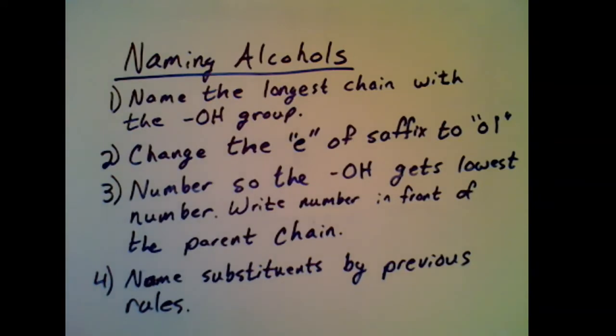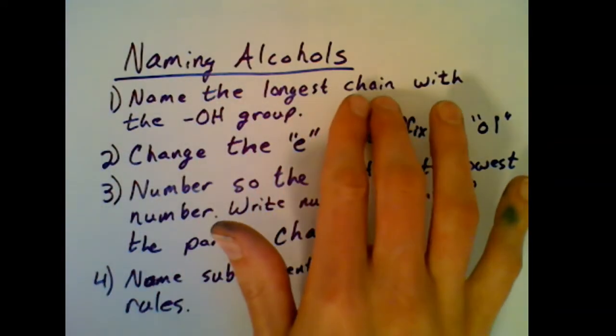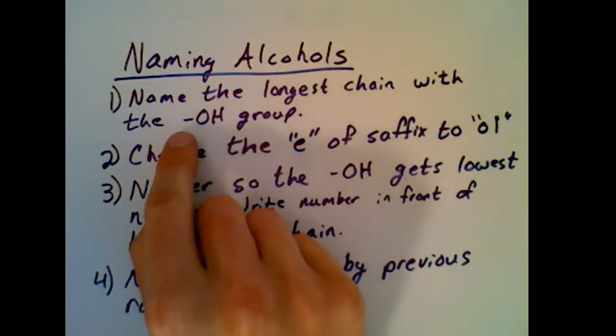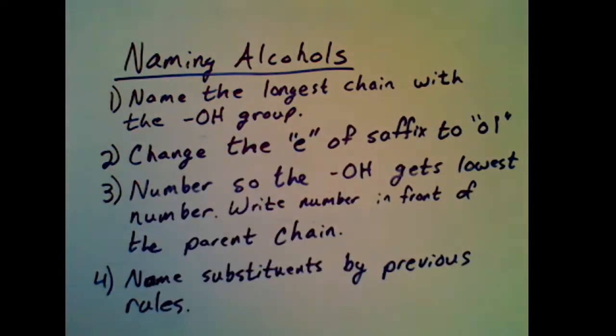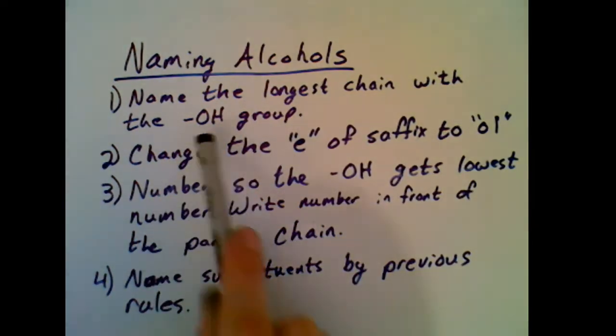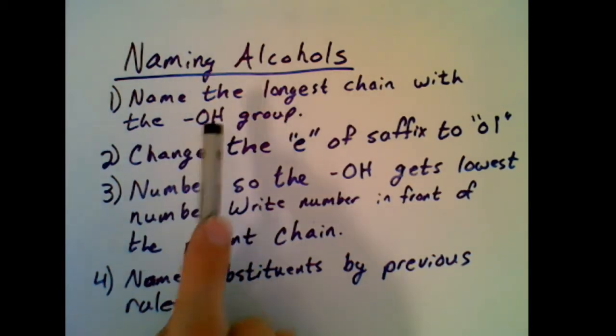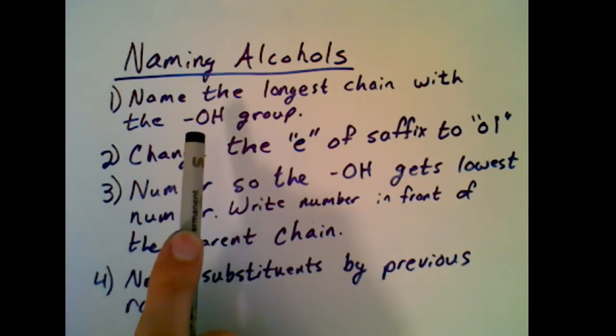So the next thing we need to know is how do we actually name an alcohol? When it comes to naming alcohols, what we're going to do is find the longest chain of carbons, but that chain of carbons must contain the OH group. If it doesn't contain the OH group, find the longest chain that actually does. That is your parent chain.